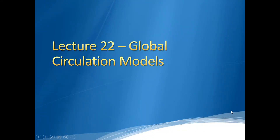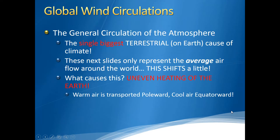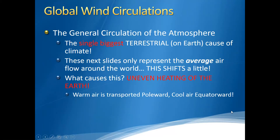Now that we're done talking about the general overview of the different scales of circulation, this lecture we're going to cover global circulation models. These are important because they're the single biggest cause of climate. So if you've ever wondered why it rains in your area, why it doesn't rain, why there are deserts in some places and tropical rainforests in others, hopefully we can uncover that a little bit today.